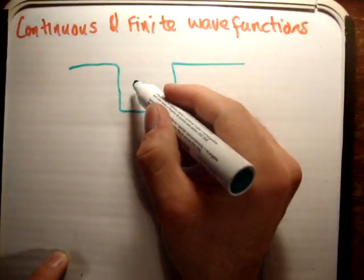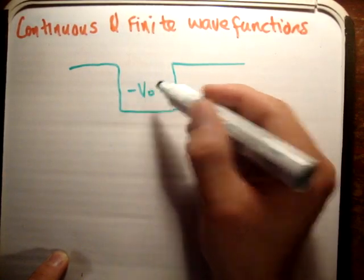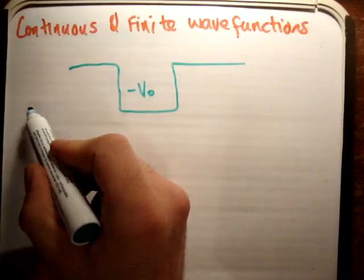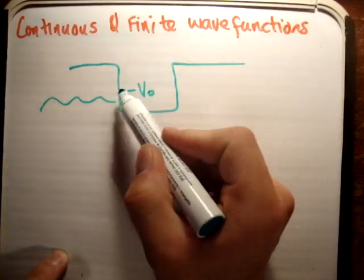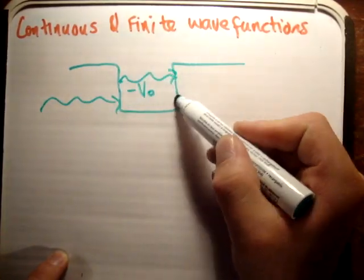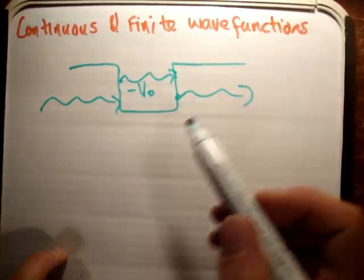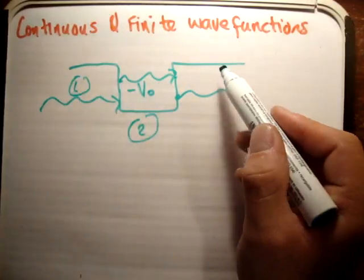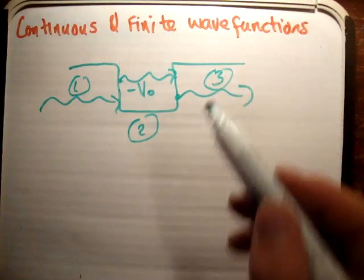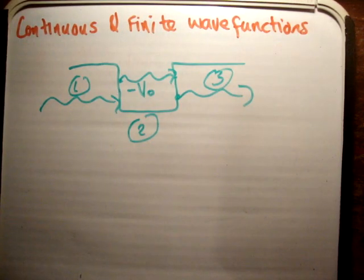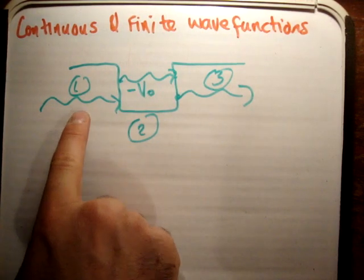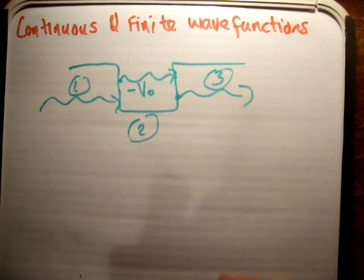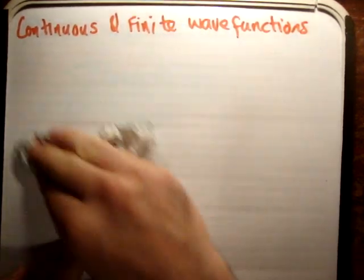For example, if I had a potential of negative V0 here, my wave function would exist in three different areas, namely region 1, region 2, and region 3. And you need to analyze what happens to the wave function at each of the boundaries — the boundary between 1 and 2, and the boundary between 2 and 3.